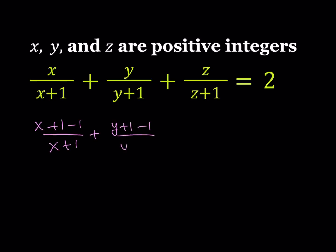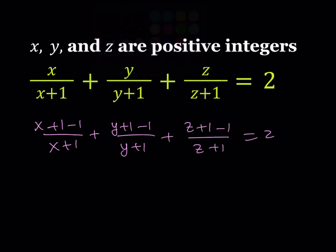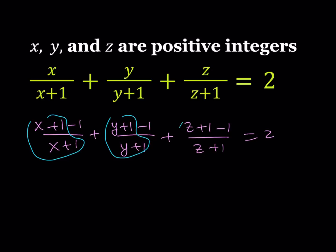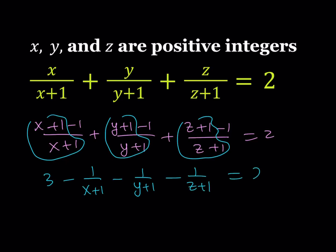Y plus 1 minus 1 and Z plus 1 minus 1. From here, notice that we're going to be getting X plus 1 over X plus 1, which is 1, another 1, and another 1. So the sum of these 1's is going to be 3. So we're getting 3 minus 1 over X plus 1 minus 1 over Y plus 1 minus 1 over Z plus 1, and the whole thing is equal to 2.